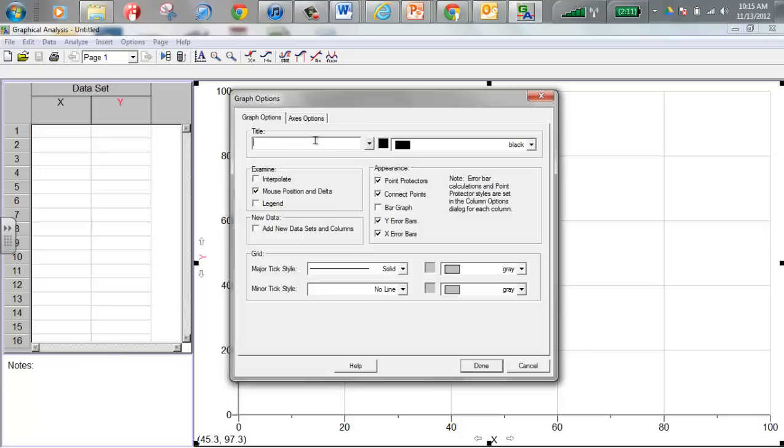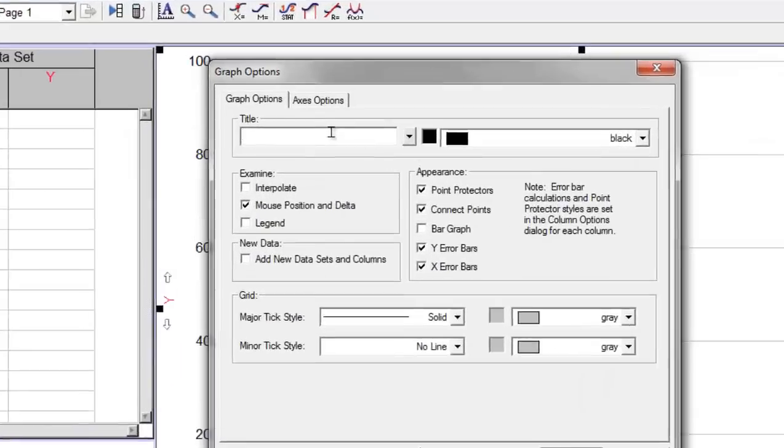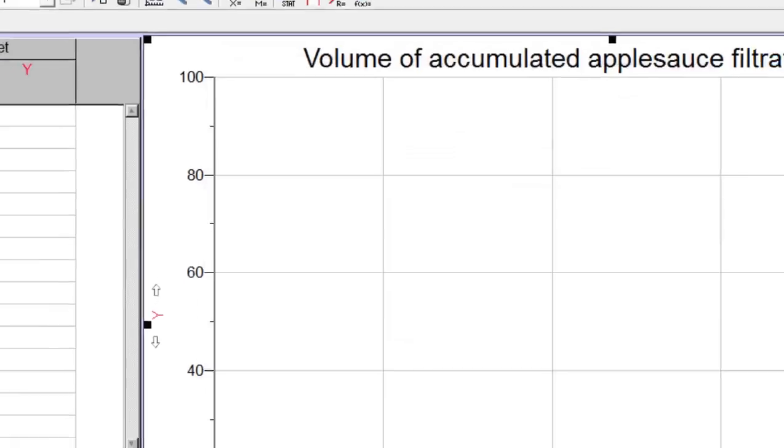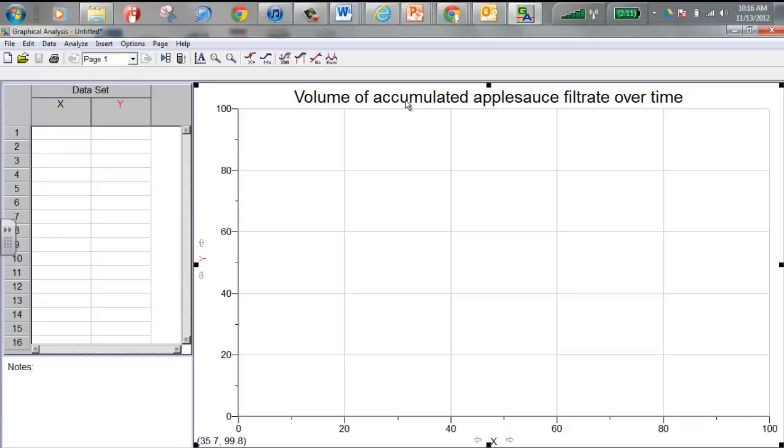A good title of a graph describes what the graph is and it relates your axis labels. Now what this is going to be is the volume of accumulated filtrate over time. Accumulated means it's accumulating, stacking up, collecting more and more applesauce filtrate. Filtrate is material that goes through a filter. This relates what the y-axis will be - this is going to be volume and the x-axis.